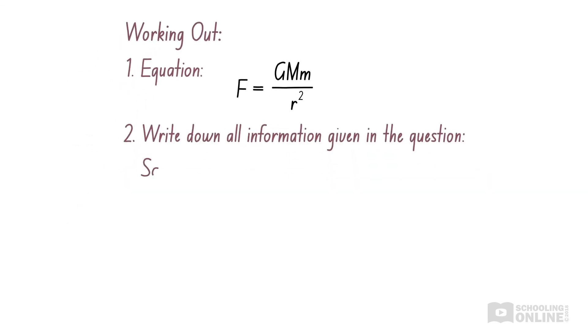In the first scenario, the distance is r and the force is 200 Newtons. Let's take the mass of Mars to be big M, and the mass of the satellite to be little m. Substituting these values into the equation gives the following.